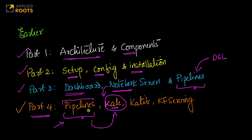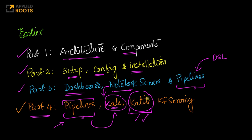Kale will make building pipelines as simple as just clicking a few buttons, without worrying too much about the domain-specific language that Kubeflow has. We will also cover Katib, which is a key component of Kubeflow used for hyperparameter search and neural architecture search. For a neural network, the architecture itself is one of the hyperparameters, and within the context of Kale, Katib is just a few clicks away.